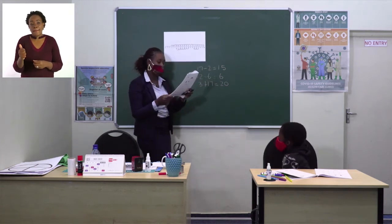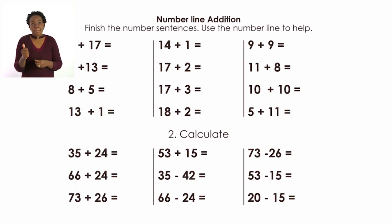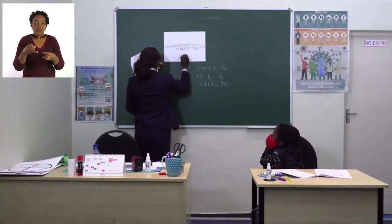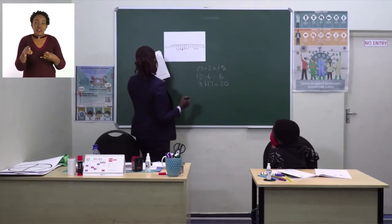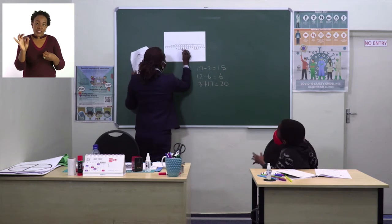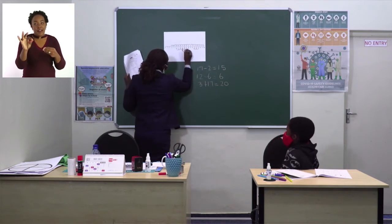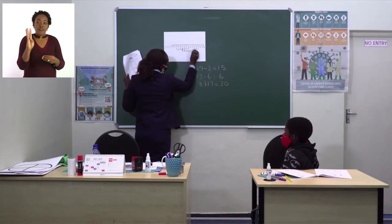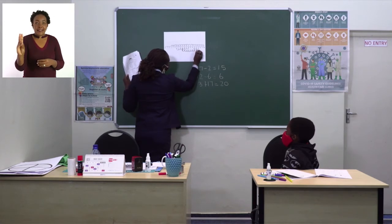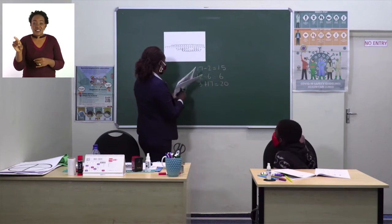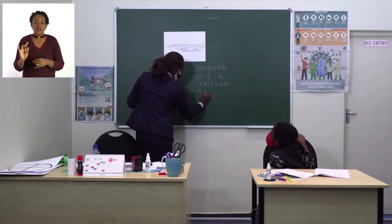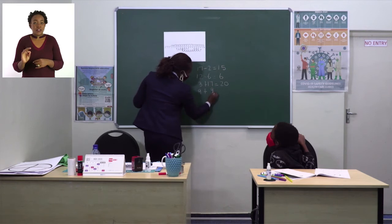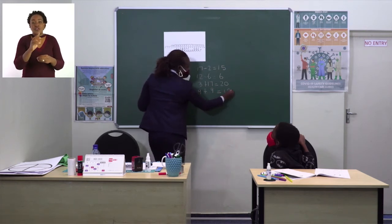Let me do one more: 9 plus 9. We go to the number 9 and add 9 numbers — 1, 2, 3, 4, 5, 6, 7, 8, 9 — so the answer is 18. 9 plus 9 equals 18.